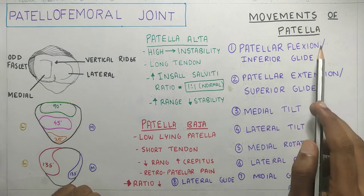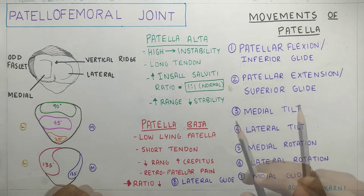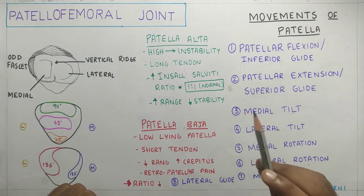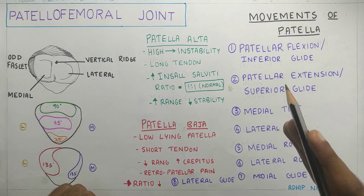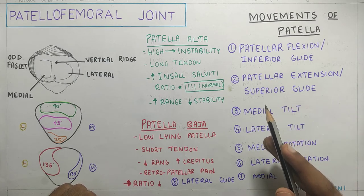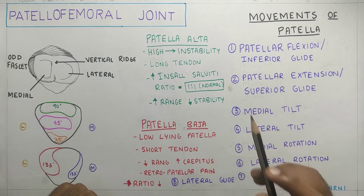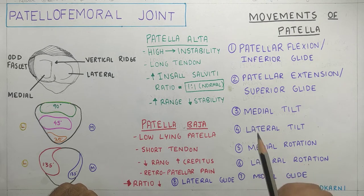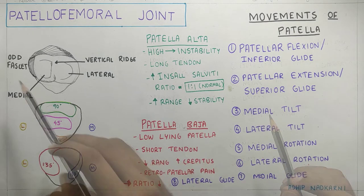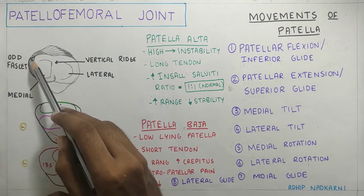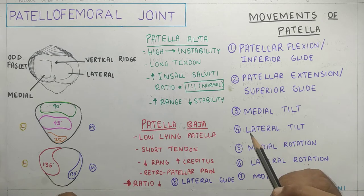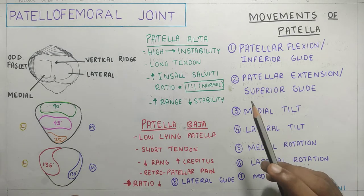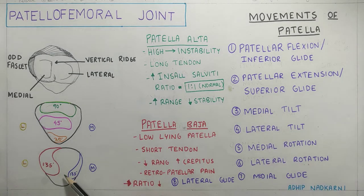Let us start with patellar flexion. As the patella crosses 90 degrees at the knee joint, the contact begins to migrate inferiorly, and the smaller odd facet makes contact with the femoral condyle. This smaller odd facet makes contact with the femoral condyle during full flexion.